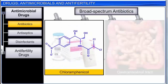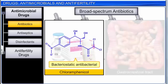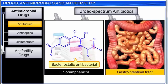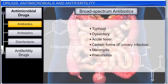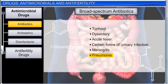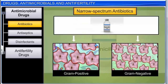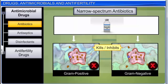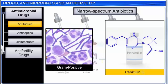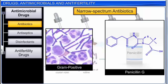Chloramphenicol is a bacteriostatic antibacterial that is rapidly absorbed from the gastrointestinal tract and can therefore be given orally in cases of typhoid, dysentery, acute fever, certain forms of urinary infection, meningitis, and pneumonia. Narrow-spectrum antibiotics, on the other hand, are active against gram-positive or gram-negative bacteria, but not both. Penicillin G is a narrow-spectrum antibiotic effective against gram-positive bacteria.